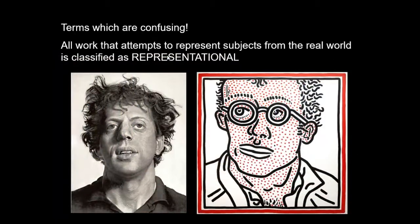We also want to look at some terms people sometimes confuse. The term representational doesn't mean photographically realistic. Representational just means the image depicts something we can agree on seeing in reality. These two portraits are by different artists — male figures with curly-ish hair, definitely human beings — but you would never mistake the one on the right for a photograph. The one on the left is a painting, but it's so believable it almost looks like a black and white photograph. Even though they're different in style, because they clearly represent something from the real world, they are representational.